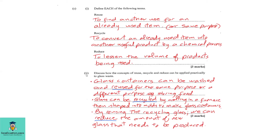Part c, question two: Discuss how the concepts of reuse, recycle, and reduce can be applied practically to glass waste. Glass containers can be washed and reused for the same or a different purpose, for example storing food. Glass can be recycled by melting in a furnace and then shaping into molds to make new glass containers. By reusing and recycling glass, we can reduce the amount of new glass that needs to be produced.